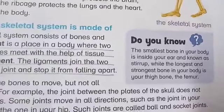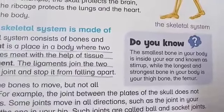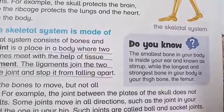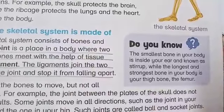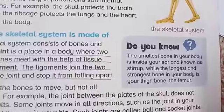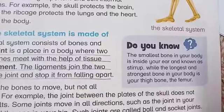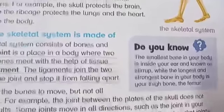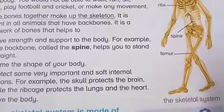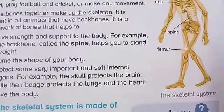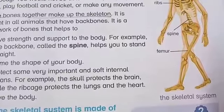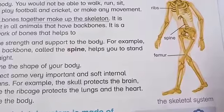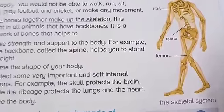The smallest bone in our body is present in the ear and is called the stirrup. The longest bone present in our body is the thigh bone, called the femur. Here in the diagram you can see the femur bone, while the smallest bone, the stirrup, is present in the ear.